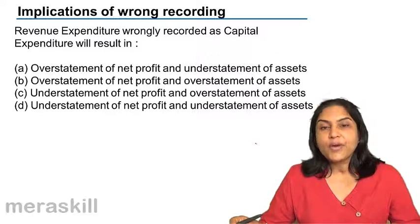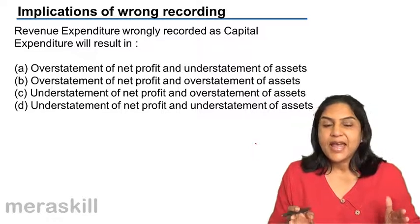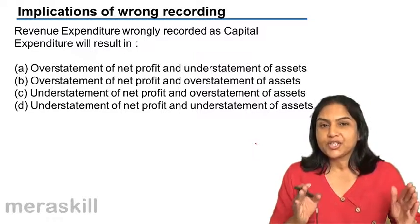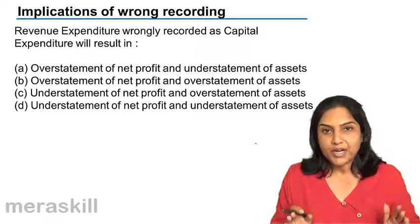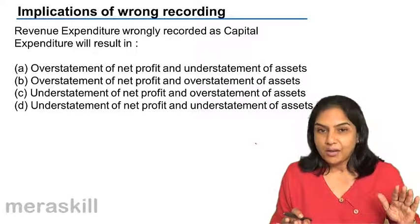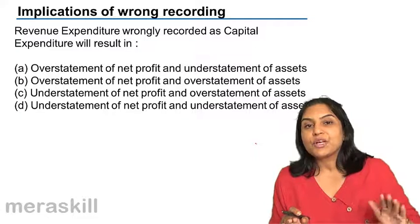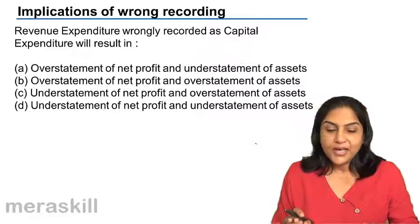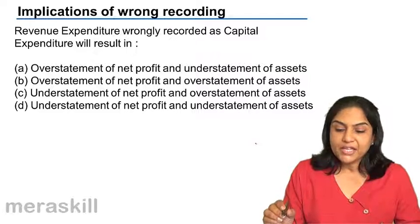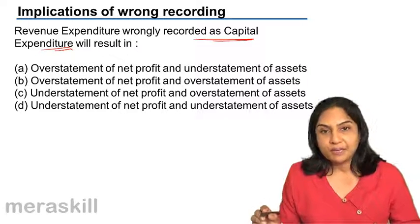A revenue expenditure is an expense taken to the profit and loss account, and an expense reduces our profits. So a revenue expenditure should actually reduce our profits. Now, if revenue expenditure is wrongly recorded as capital expenditure, what is the implication?